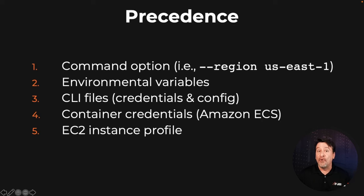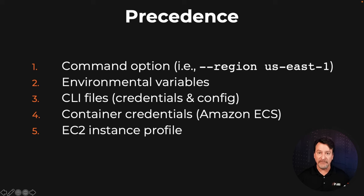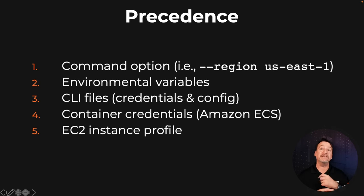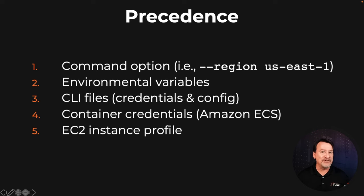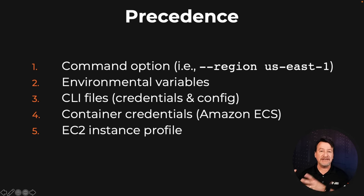This is probably one of the most important parts of this video — just this precedence order. The first three in particular: command line options take precedence over environmental variables, which take precedence over whatever you've set up using AWS configure. Please remember that because it shows up on exams. It also shows up in tricky situations where someone keeps running an EC2 command but getting the wrong region — check to see if there's an environmental variable that's actually overriding what they expect from their AWS configure directory.